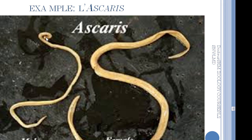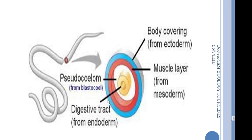We have chosen the phylum of nematodes and the example of Ascaris species. Here is a photo of Ascaris — the male and the female. The female is longer than the male. These animals live a parasitic life and parasite the digestive tract. They are very dangerous parasites with several characteristics.